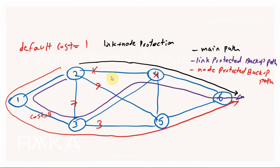But that does not mean that node protection is always better than link protection. If the outgoing link fails but the node protection backup path is used, the backup path may not be the best path. For example, in this topology, both link and node protection are enabled in router R2, but the node protection backup path is installed since it has higher priority. What if the outgoing link fails and not the next-hop router? In that case, the node-protected backup path replaces the main path, which is not the best choice.